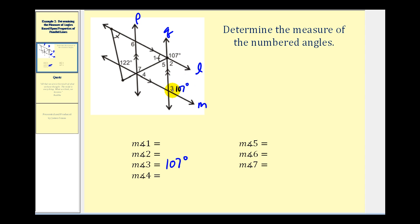Angle two and angle three would be consecutive interior angles, or same-side interior angles, which means they're supplementary. So the measure of angle two plus the measure of angle three must equal one hundred eighty degrees, which makes the measure of angle two seventy-three degrees.